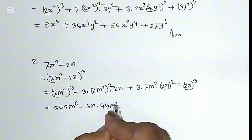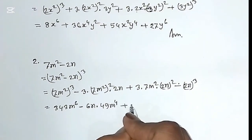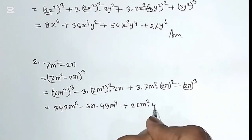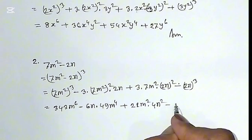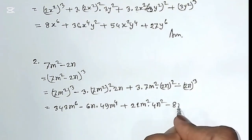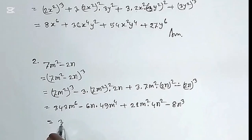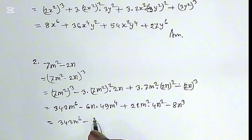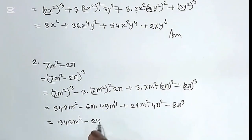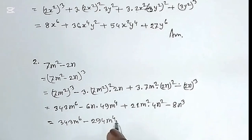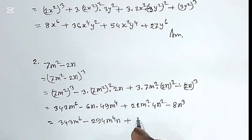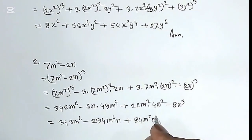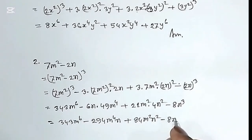...49 m to the power 4, plus 3 times 7 is 21, m squared into 4n squared, minus the cubic value of 2 is 8, n cube. So 343 m to the power 6, minus 294 m to the power 4 n, plus 84 m squared n squared, minus 8 n cube.